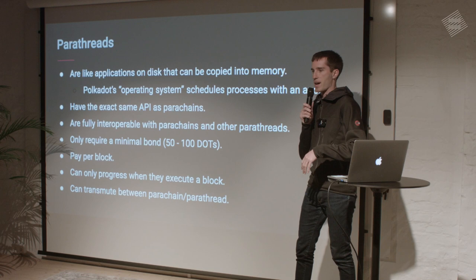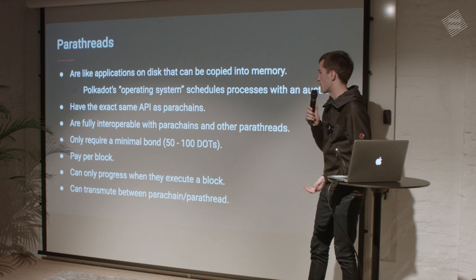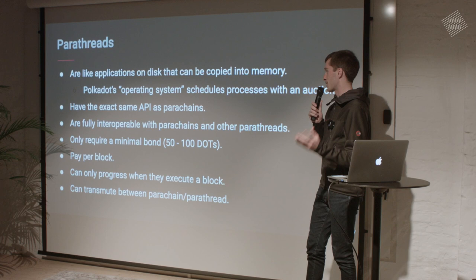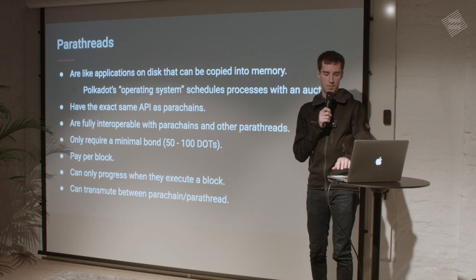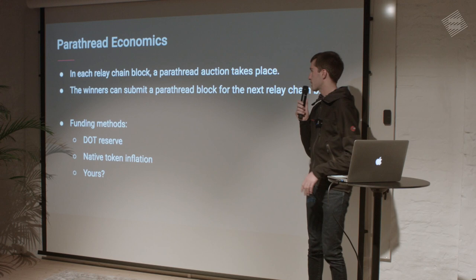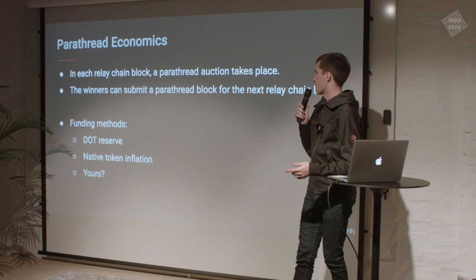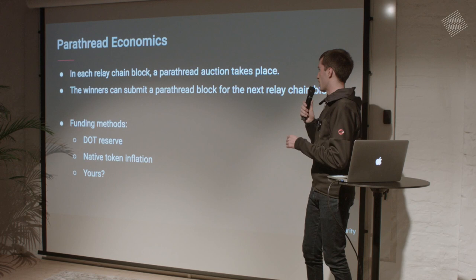It's a different economic model. On a parachain, you're putting up a very large amount of money at the beginning and then you're going to get it all back, but there's obviously an opportunity cost — you could do other things with those tokens, like nominate a validator. With a parathread you're paying a much smaller amount but you're actually paying this money per block. Every block of the relay chain there's an auction for parathreads, and the winners of this auction can submit a block for the next relay chain block.